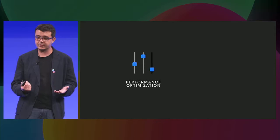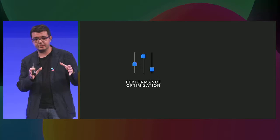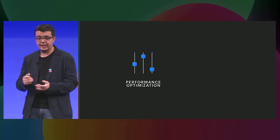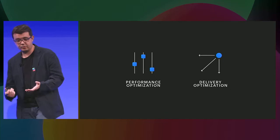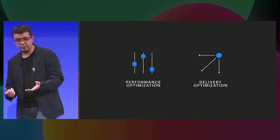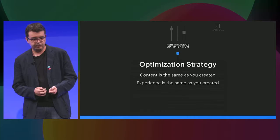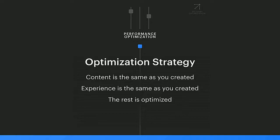Our strategy and optimizations can be bucketed in two large pieces. First one: performance, where we optimize a lot of the runtime logic so everyone's experience is great. The second one is delivery, where we optimize for instant load time so no one sees that loading indicator or loading spinner. Our strategy is also quite unique — we want to ensure that the content you create is the same as you've seen it, that the experience you create in studio is absolutely the same, unchanged. Well, it turns out behind the scenes there's plenty of room to optimize, plenty of things that we can do.